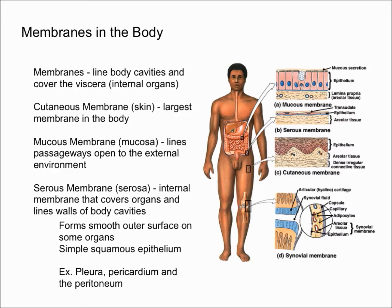The serous membrane, also known as the serosa, is the internal membrane that covers organs and lines walls of body cavities. It forms a smooth outer surface on some organs and consists of a simple squamous epithelium — think of simple squamous as essentially flat, like pancakes.